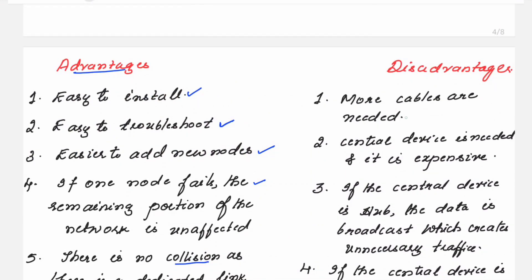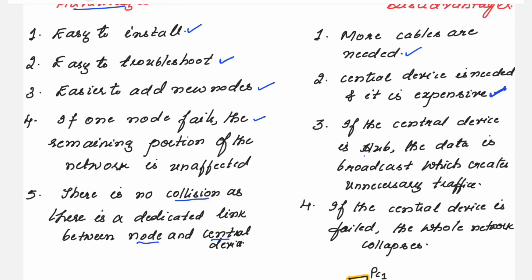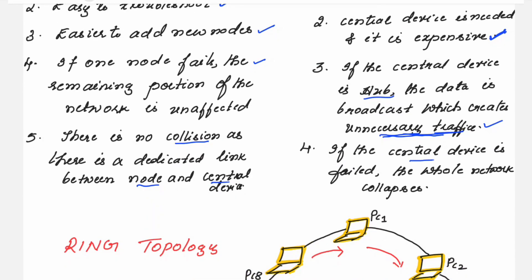The disadvantages of star topology are: more cables are needed, and a central device such as a hub or switch is needed, which is expensive. If the central device is a hub, data is broadcast to all nodes, which creates unnecessary traffic in the topology. And if the central device fails, the whole network collapses — this is the biggest disadvantage.